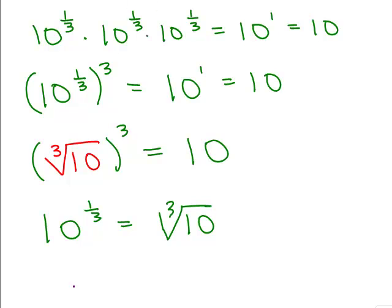What would, let's see, how about 64 to the 1 third equal? That would mean the cube root of 64, and so you have to think, what number cubed is 64, and that's going to be 4.